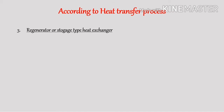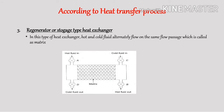The third type is the regenerator or storage type heat exchanger. In this type, hot and cold fluid alternatively flow on the same flow passage, which is called a matrix. First, hot fluid flows over the matrix, which gets heated and stores energy as thermal energy. Then the cold fluid flows over the matrix, and the matrix gives the stored thermal energy to the cold fluid. Since the matrix gains energy from the hot fluid and loses heat to the cold fluid, this type is called a regenerator.